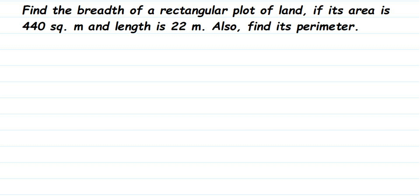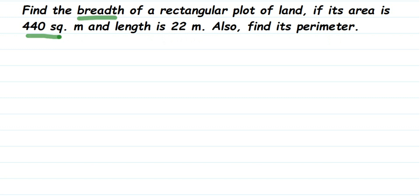Hello everyone. Here we have a question: find the breadth of a rectangular plot of land if its area is 440 square meter and length is 22 meter. Also find its perimeter. Note that square meter and meter square mean the same thing. We have to find out the breadth, and later we also need to find the perimeter. To find the perimeter of a rectangle, we need both the length and breadth, so we'll find the breadth first.